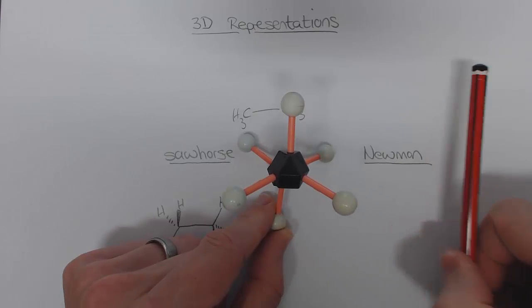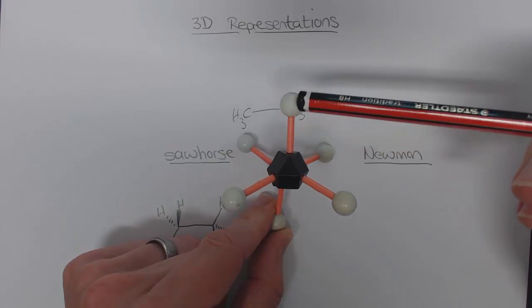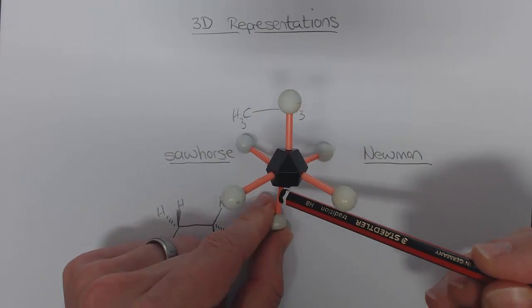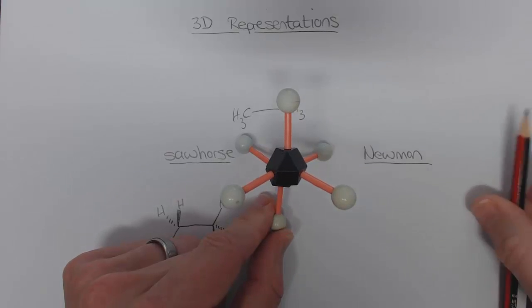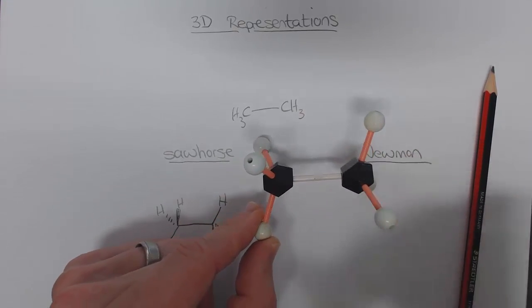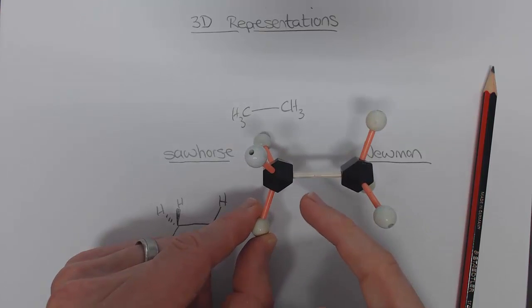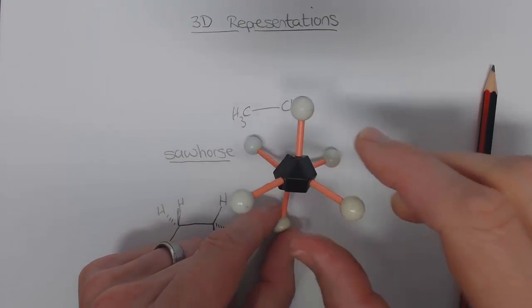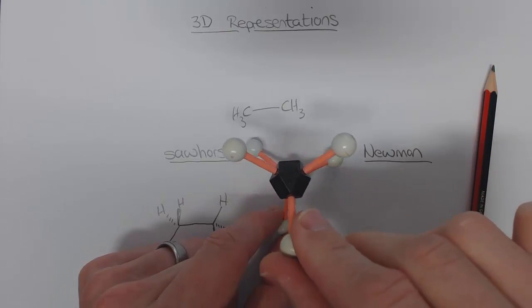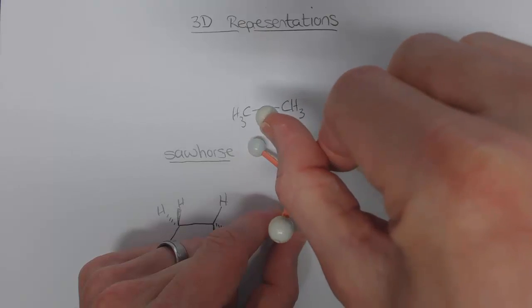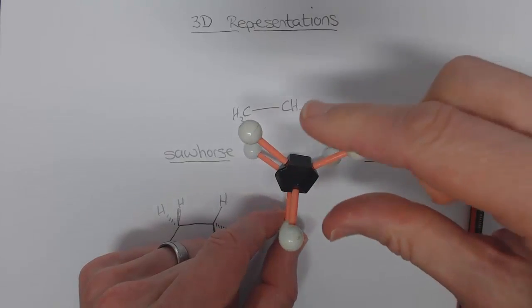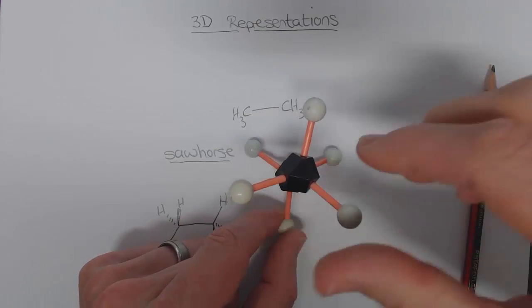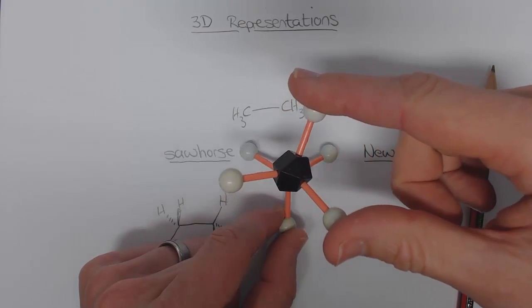The hydrogen pointing directly up in the front is directly opposite — the word we use is antiperiplanar — to the hydrogen placed behind. This bond is a sigma bond, and there is effectively free rotation around it. However, it's actually not as completely free as we might say: there is an energetic barrier to the rotation.